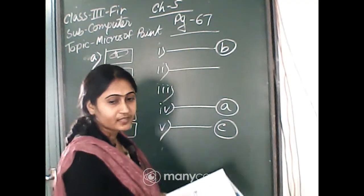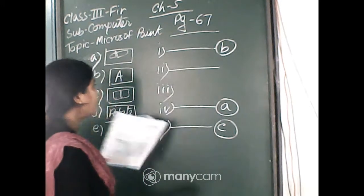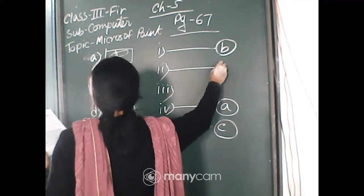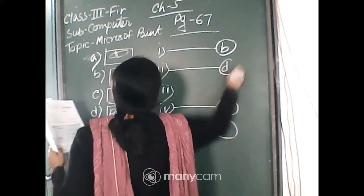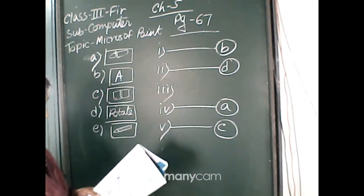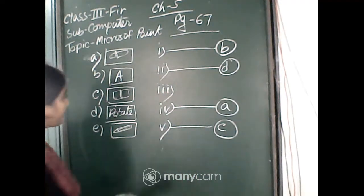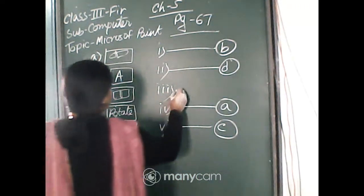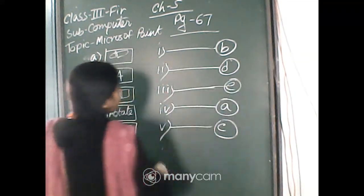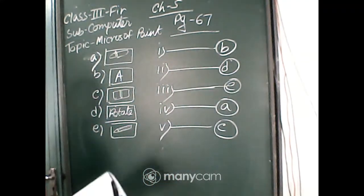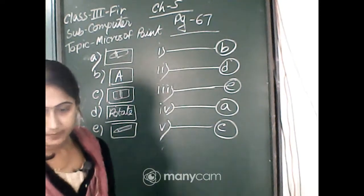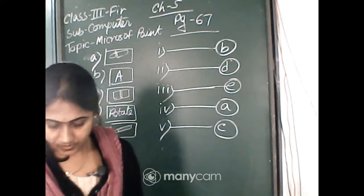Please note down the matching. Number D, answer is 2. And number E is the Pencil tool — used to draw freehand drawing, answer is E. Matching is now done.